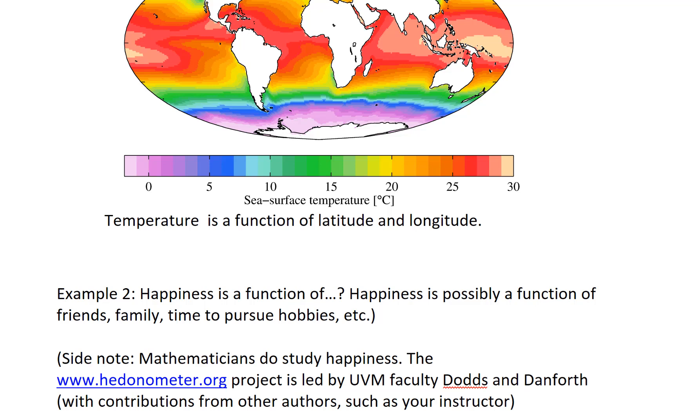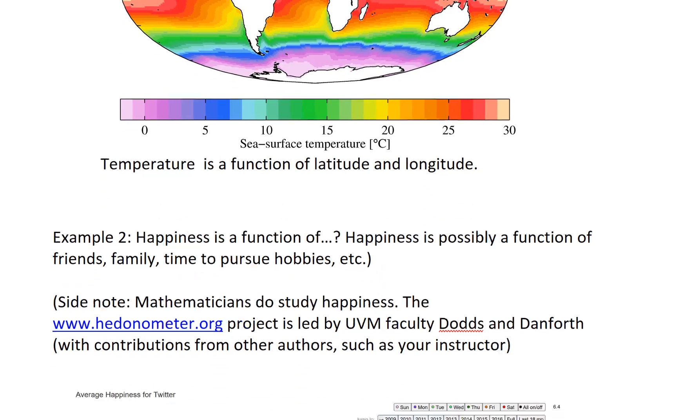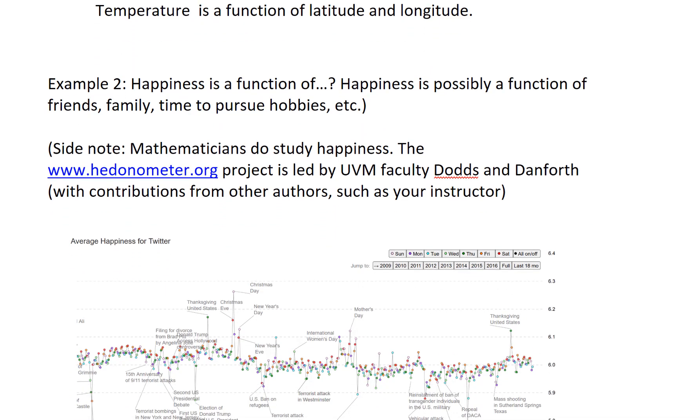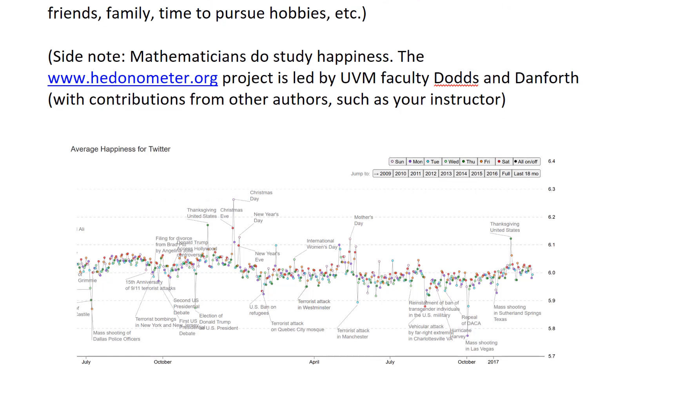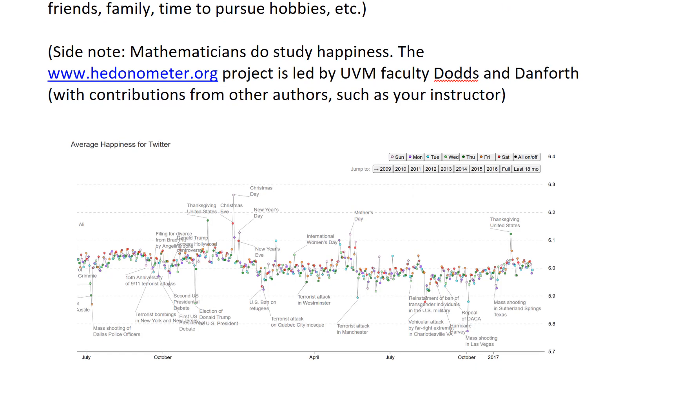And as a side note, I'll let you know that there's actually work being done here at UVM. There's a Hedonometer.org project led by Dodds and Danforth. I was actually a part of this project for my PhD work here at UVM. And there is a really fascinating interactive graphic available here at Hedonometer.org. So if you're interested in happiness and data science, I highly encourage you to check that out.